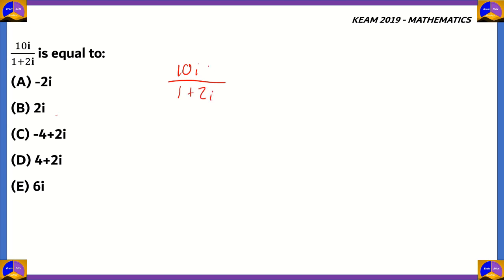In the question, you can see that both the numerator and the denominator are complex numbers. 1 plus 2i is the complex number in the denominator. In order to compute efficiently, we need to remove the complex number from the denominator. How do we do that? We take its conjugate.